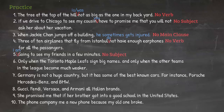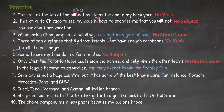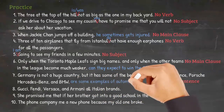Number six: 'Only when the Toronto Maple Leafs sign big names and only when other teams in the league become much weaker.' We can fix this as: 'Only when the Toronto Maple Leafs sign the big names and only when other teams in the league become much weaker can they expect to win the Stanley Cup.' Number seven: 'Germany is not a huge country, but it has some of the best known cars. For instance, Porsche, Mercedes-Benz and the BMW.' The second sentence is not complete. We could say: 'For instance, Porsche, Mercedes-Benz and the BMW are some examples of automotive perfection.'